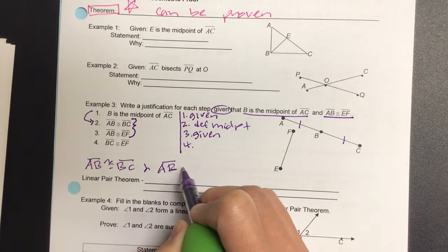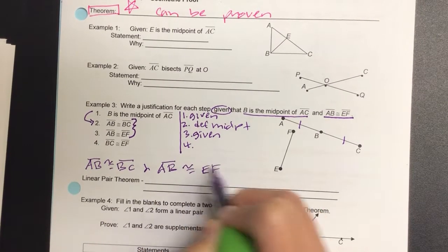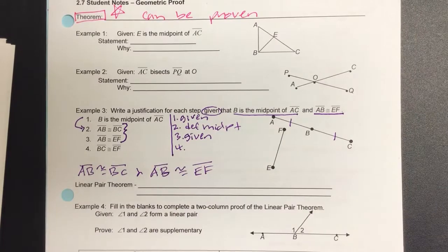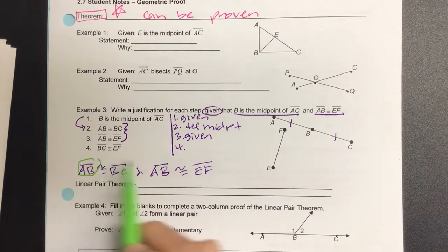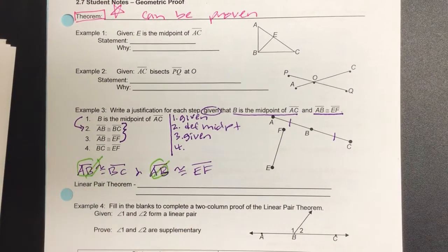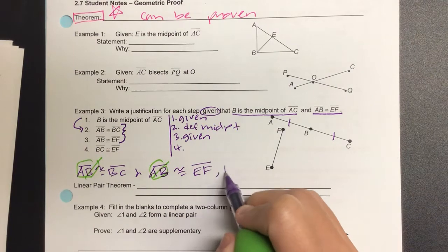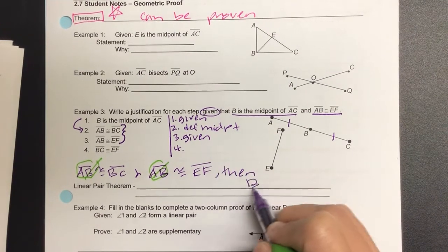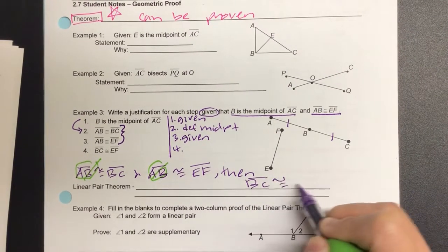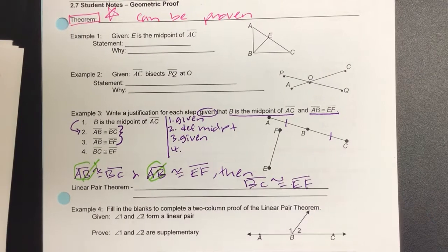And AB is also congruent to EF. And let's see what's been repeated. Which segment has been repeated that I could eliminate? AB. So then my result will be BC is congruent to EF. And let's see if that is true on the next statement.